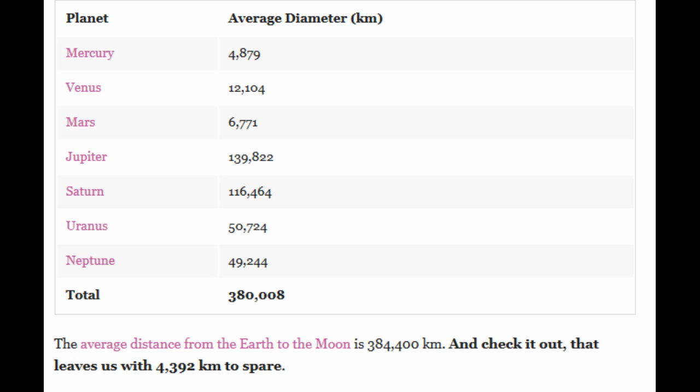So it totals 380,008 kilometers. The average distance from the Earth to the moon is 384,400 kilometers. So check it out. It leaves us with about 4,392 kilometers of empty space if you put every planet in the solar system between Earth and the moon.